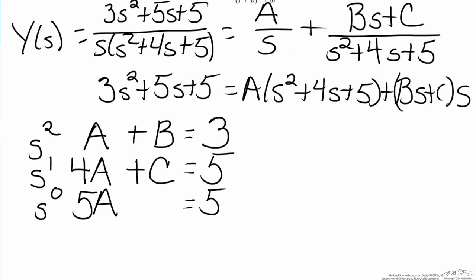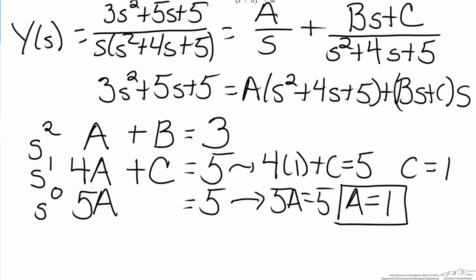We can now solve for A, B, and C, using first we'll start with the s to the zero of the equation, to find A equals one. We can then substitute in A equals one to the s to the first term, and that will show that C also equals one. And the s squared equation will allow us to solve for B, B equals two.